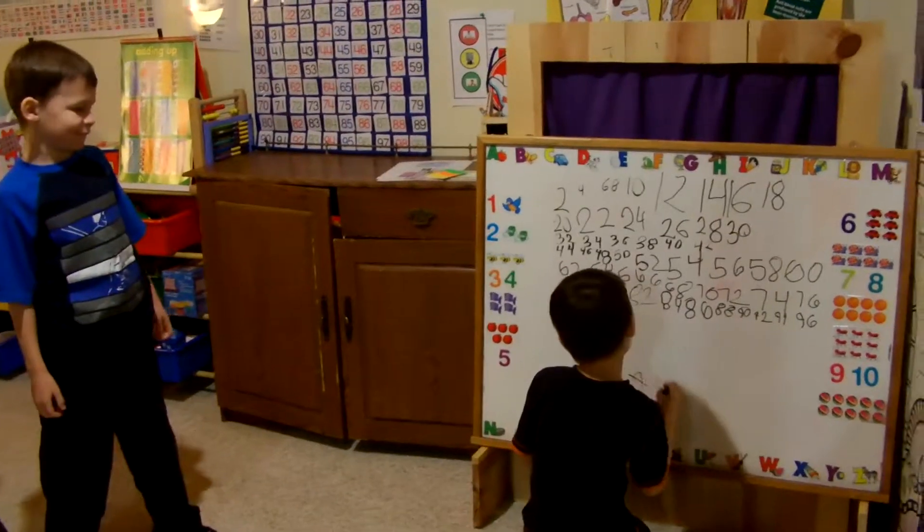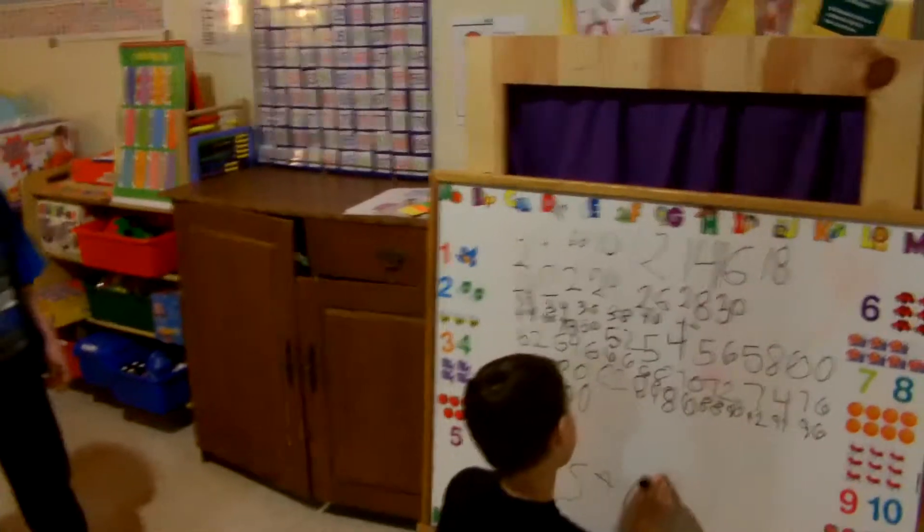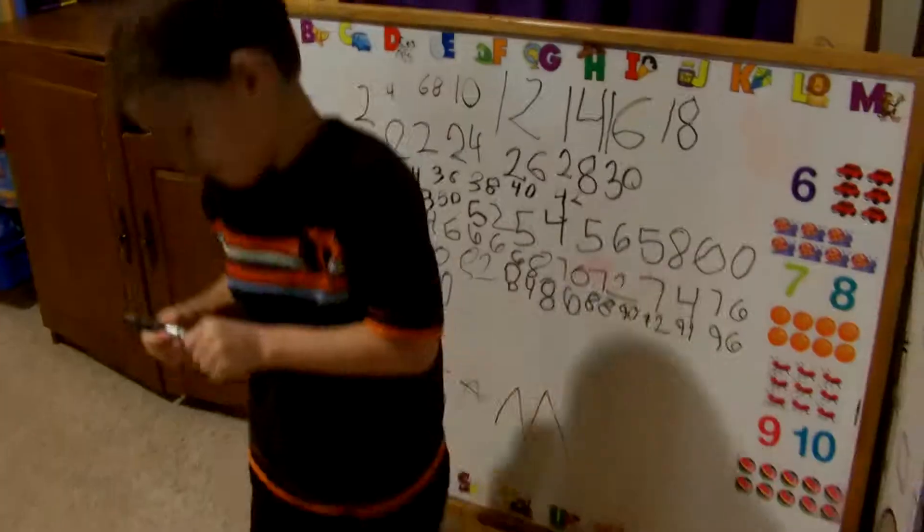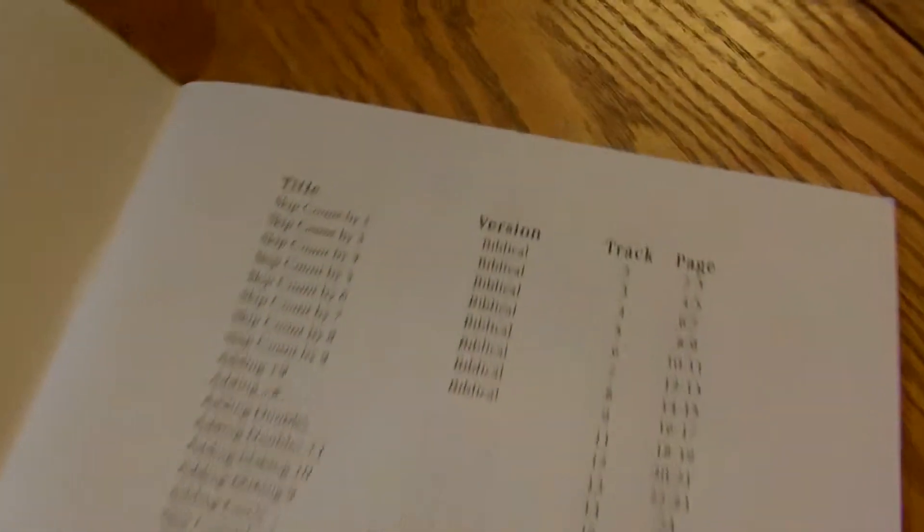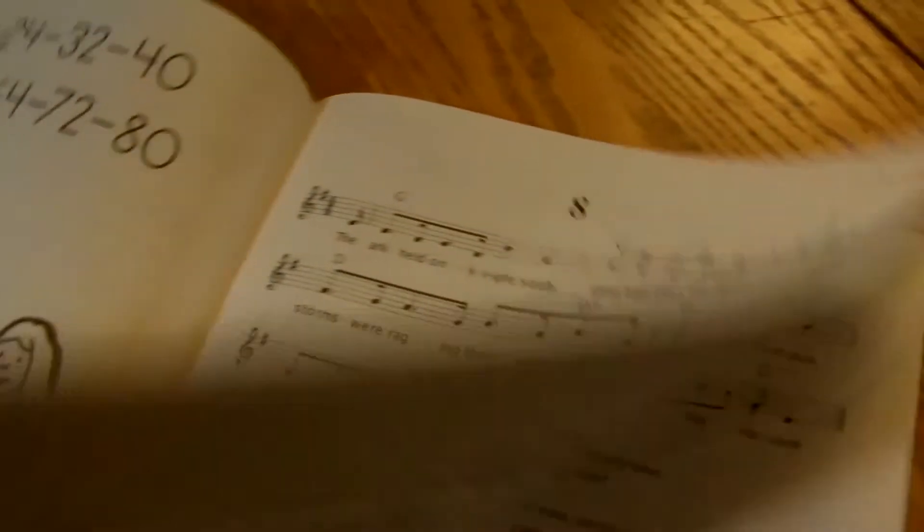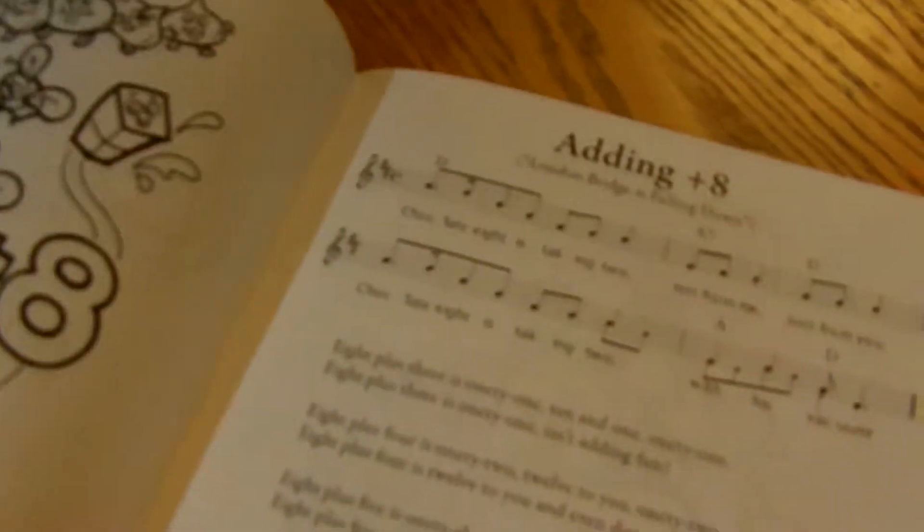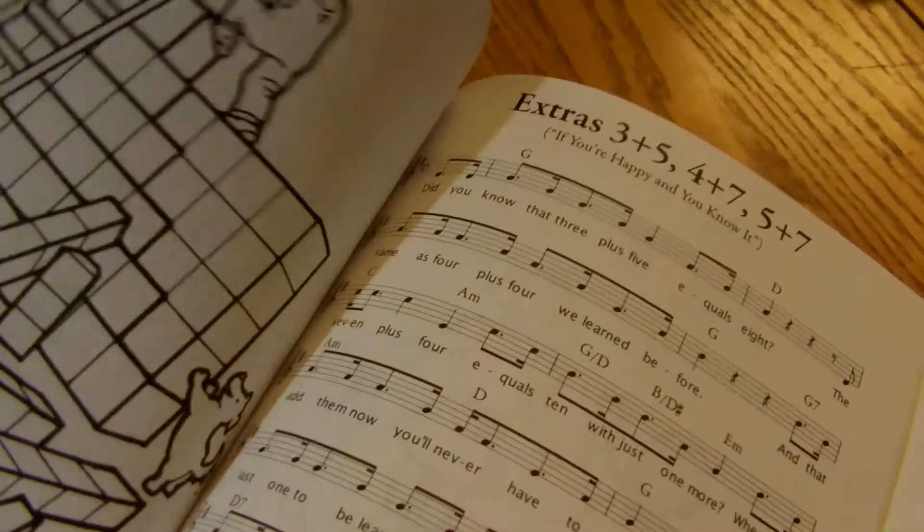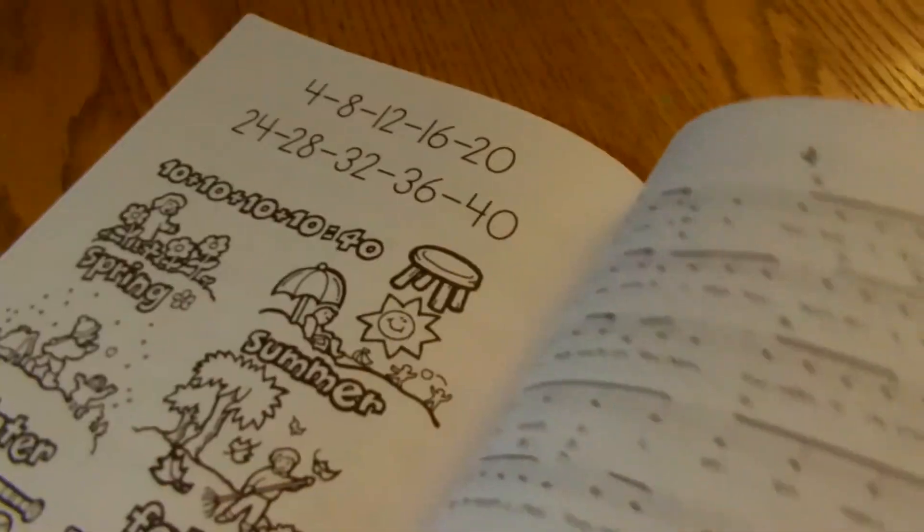We count in pairs so we can skip count. 2, 4, 6, 8, 10, 12, 14. We count on me and you. If anyone should know, they looked up to the night: 3, 6, 9, 12, 15, 18, 21, 24, and 27 in the counting club.